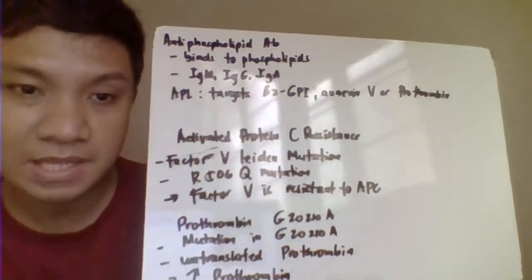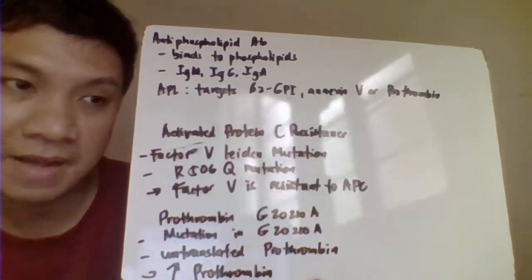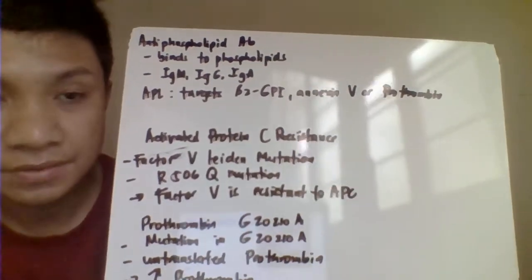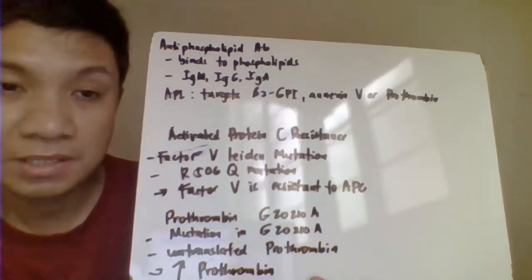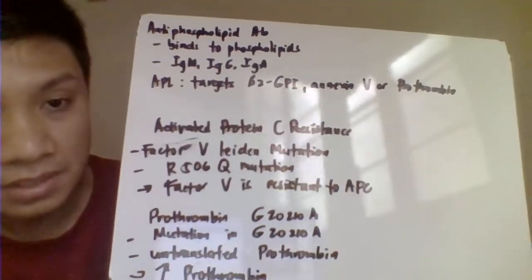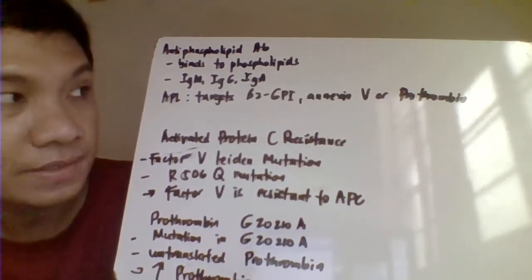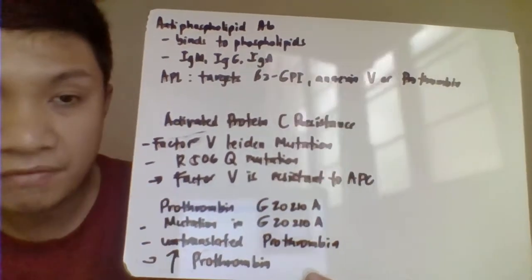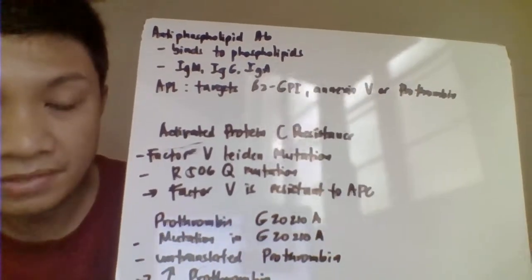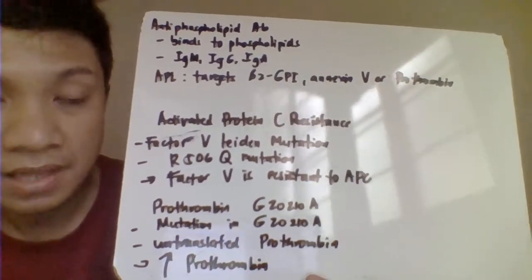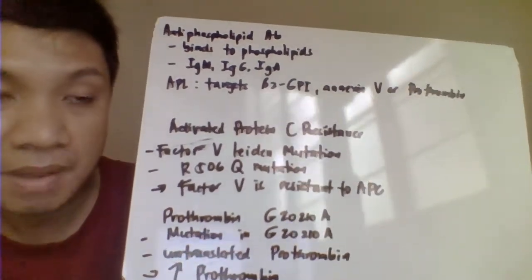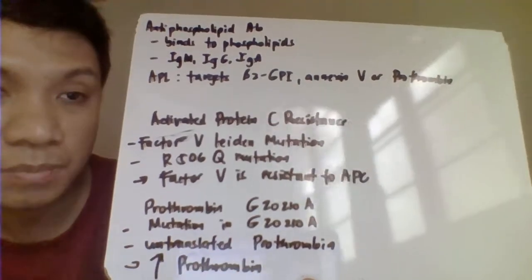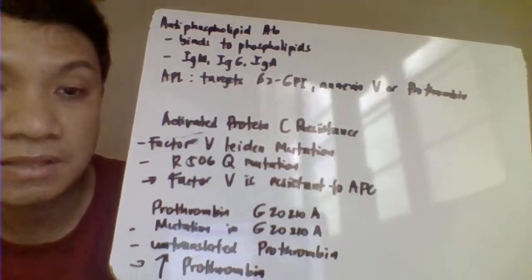Antiphospholipid antibody is produced by SLE patients and represents lupus anticoagulant. Since it's an antibody, it may be IgM, IgG, or IgA. Targets include beta-2 GPI, annexin 5, or prothrombin. APC resistance, also called Factor V Leiden mutation, occurs when Factor V is resistant to APC and cannot be digested. The APC-protein S complex normally digests Factor V and Factor VIII to prevent clot formation.